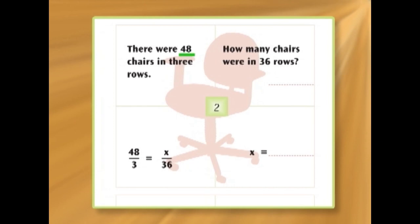There were 48 chairs in 3 rows. How many chairs were in 36 rows? That looks scary, doesn't it? But let's use the same formula. There were 48 chairs in 3 rows. So, 48 divided by 3. That's 48 over 3. How many is that? How many 3's go into 48? 3 into 4. That's 1. 1 left over. Remember that 1 is 10. 10 plus 8 is 18. 3 into 18, 6. So, 48 over 3 is the same as 16.